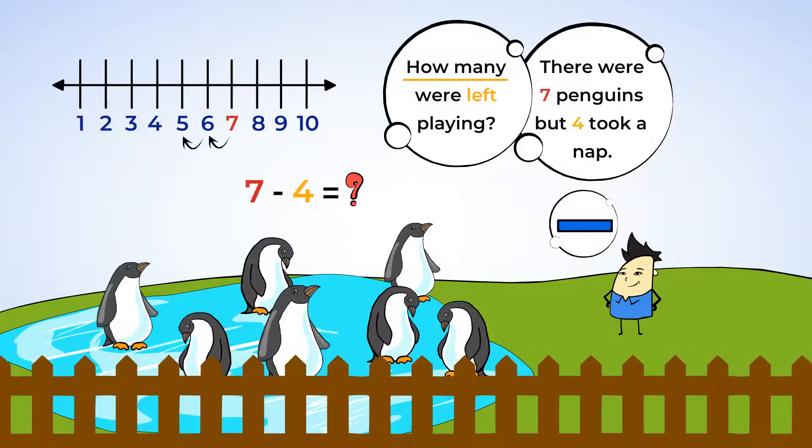One, two, three, four. What number did we land on? Three. So, there were three penguins left playing in the water. Seven minus four equals three.